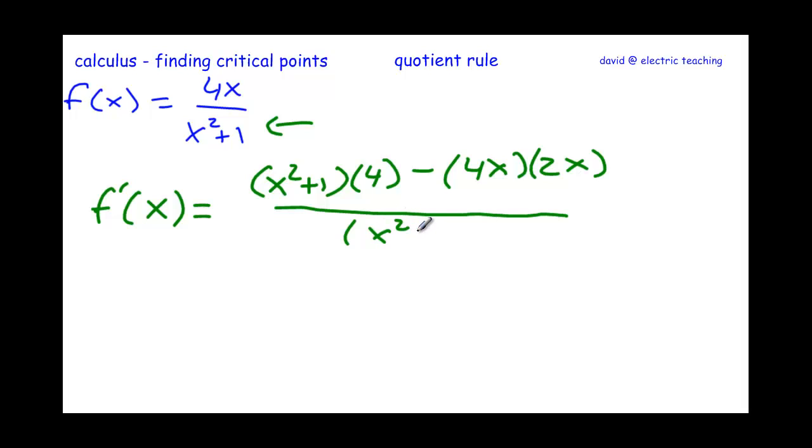I always encourage my students not to expand the binomial down here, not to mess with this. Sometimes it cancels, sometimes we reduce it. Just leave it like it is in factored form. We need to clean up the top. There's going to be some like terms. We're going to have 4x² + 4 minus 8x² on top.